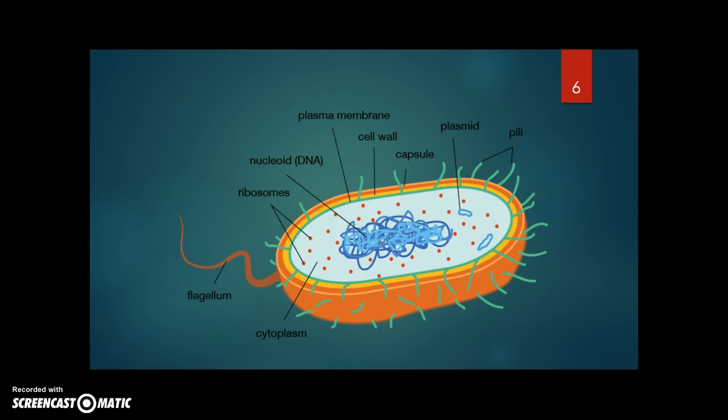The plasma membrane shows two types of extensions: the flagellum, long and present in small numbers, and they are useful for locomotion. And pili, short and in large numbers, connected to cell communication and reproduction.